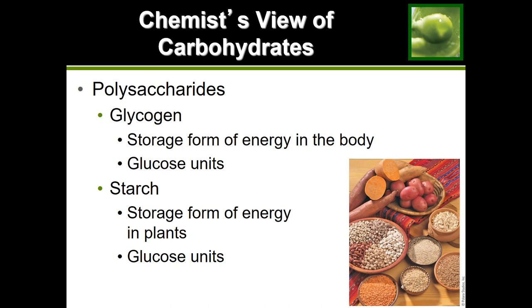Now we're going to look at some of the larger structures of carbohydrates, which are the polysaccharides. Polysaccharides are when we have more than 10 units of monosaccharides linked together. We have three main types: glycogen, starch, and fiber. We're going to look at the first two, since they are very similar to each other — glycogen and starch.